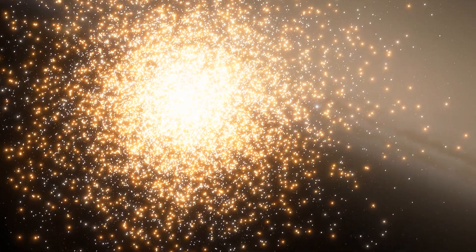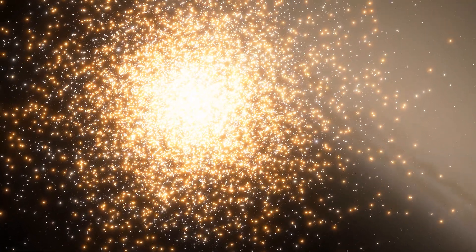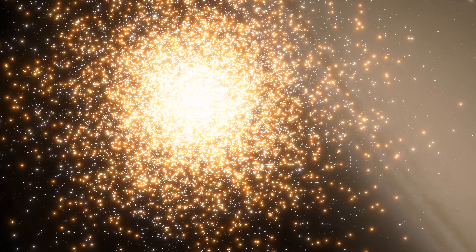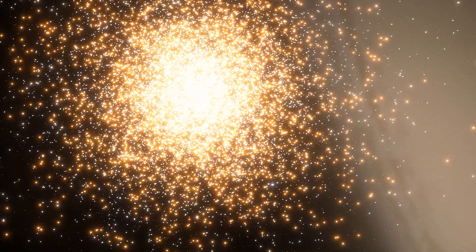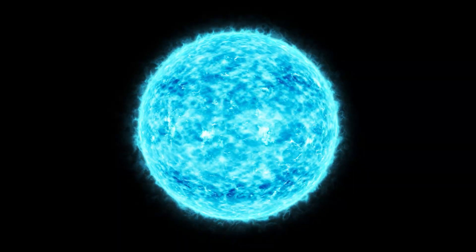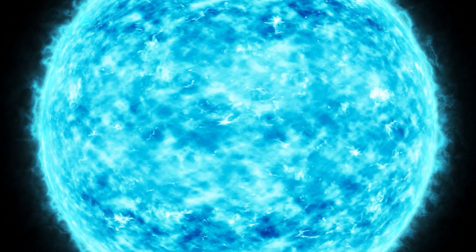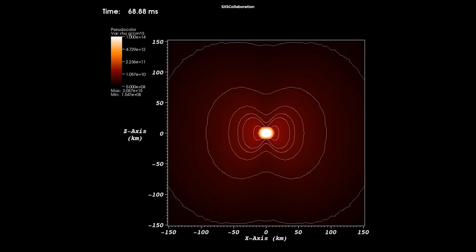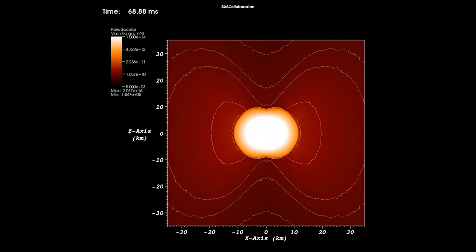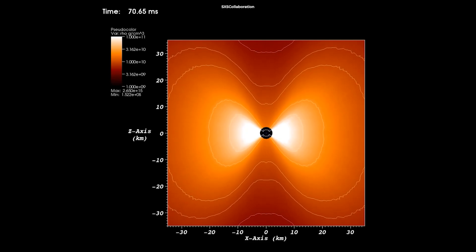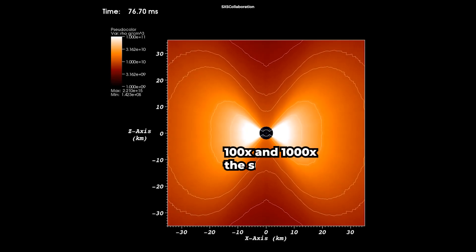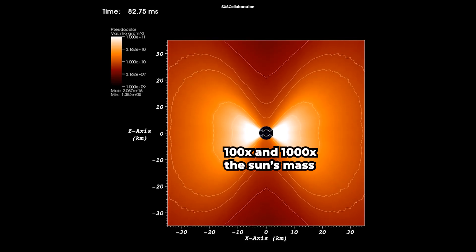First of all, one possible scenario for the formation of supermassive black holes starts with a chain reaction of collisions of stars in star clusters. The merging causes a buildup of very massive stars, which eventually collapse to form intermediate-mass black holes, which astronomers estimate to have between a hundred and a thousand times the mass of the Sun.